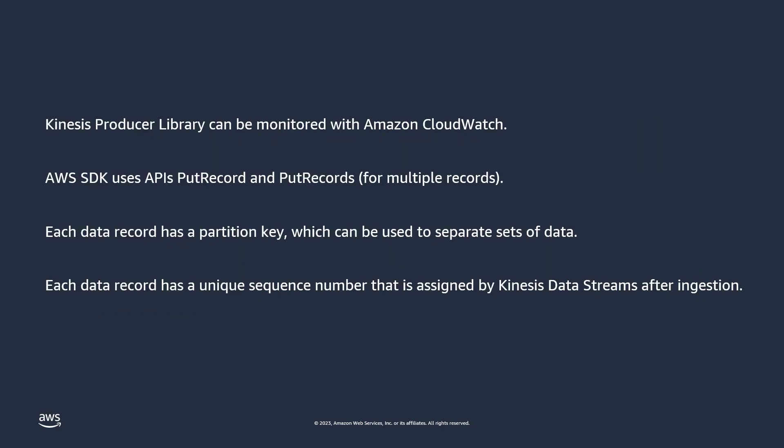When building custom data producers, here are some key facts to keep in mind. If you use the Kinesis Producer Library, it can be monitored with Amazon CloudWatch for visibility into producer performance. If you use AWS SDK, the two main APIs are PutRecord for ingesting single records and PutRecords for ingesting multiple records at a time. Each data record has a partition key, which can be used to separate sets of data and dedicate certain shards to certain data sets. Each data record also has a unique sequence number assigned by Kinesis Data Streams after ingestion, which can be used for data replay or for consumption and analysis.